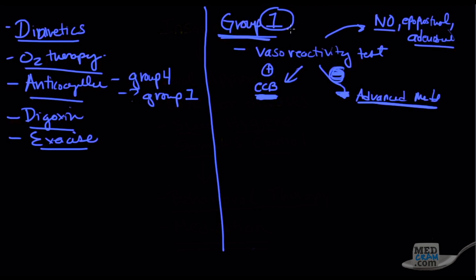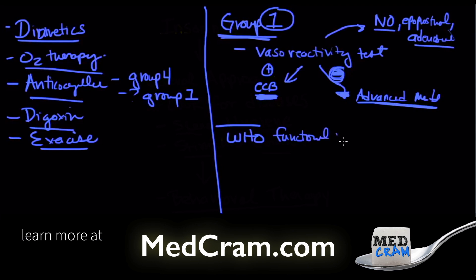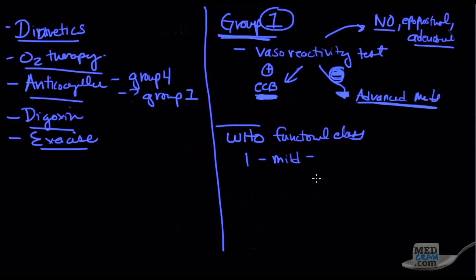But before we do, the thing that's going to determine what medication they get is to determine how sick they really are. That's determined by a WHO functional class. There's functional class one, which is the most mild and they typically don't need medications, they can be monitored. Then there's class two and class three, and these are where most of the medications are actually started. And then there's class four, which is the most severe.